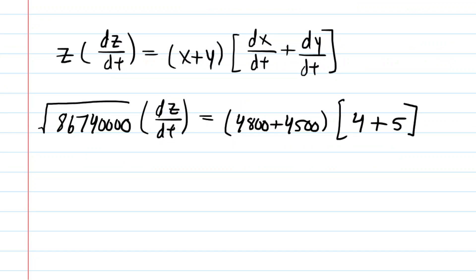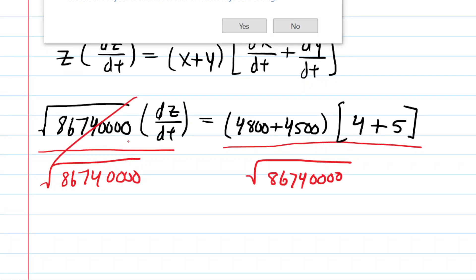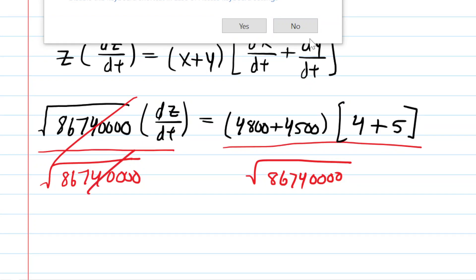And there is every value that we obtained earlier plugged in. So we can now just divide both sides of the equation by the square root of that crazy number. And that is going to give you your answer. We cancel it out, and now here we have our dZ/dt.